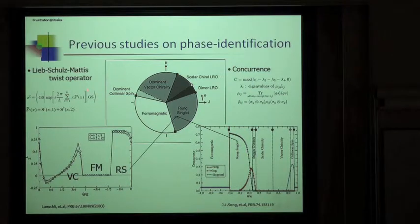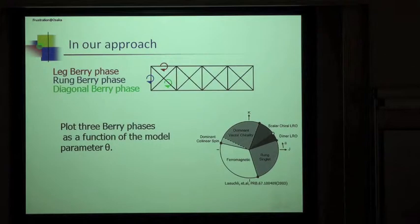This Lieb-Schultz-Mattis twist operator is defined like this one. This ζ is an order parameter, but it's a non-local order parameter. The non-local order parameter is plotted here as a function of θ. Θ is a model parameter here. This one is a phase diagram of the spin-ladder system with the ring exchange. They can identify some vector chirality phase here and the rung singlet phase here. I skip this concurrence.